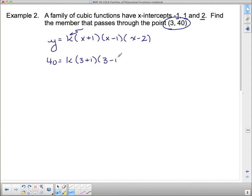So I get k times (3 + 1), (3 - 1), and (3 - 2), which means that on this side, I get k times 4 times 2 times 1, or 8k equals 40. And that must mean k equals 5.